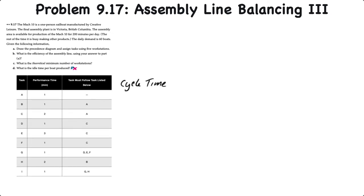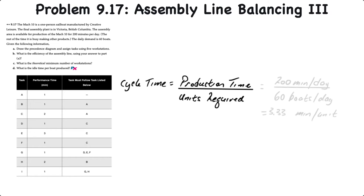Let's start by calculating the cycle time. The cycle time is the production time available divided by the units required. We have 200 minutes per day available divided by 60 boats per day, so that's 3.33 minutes per boat cycle time.